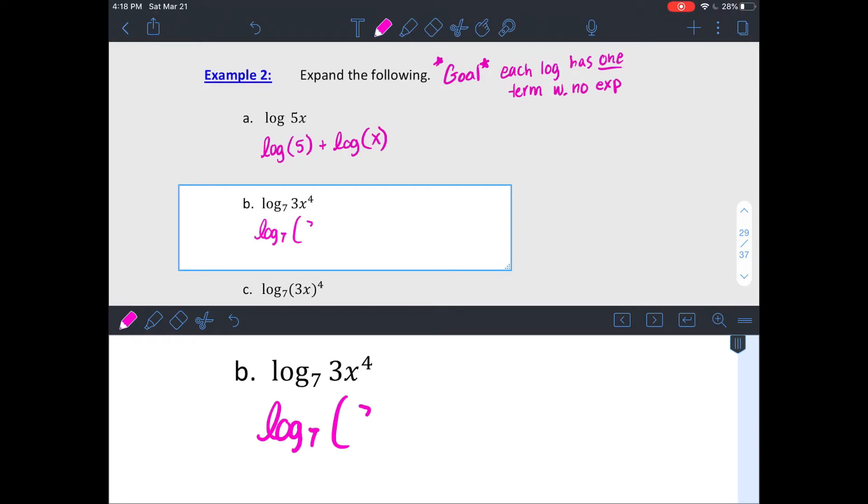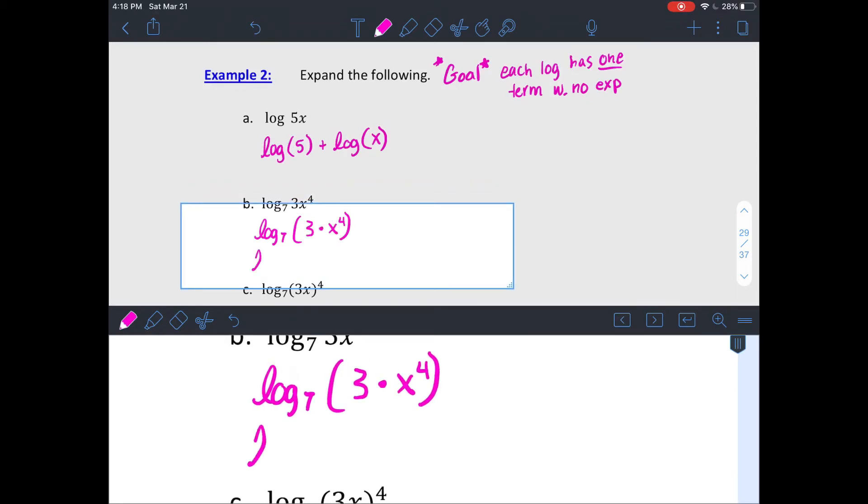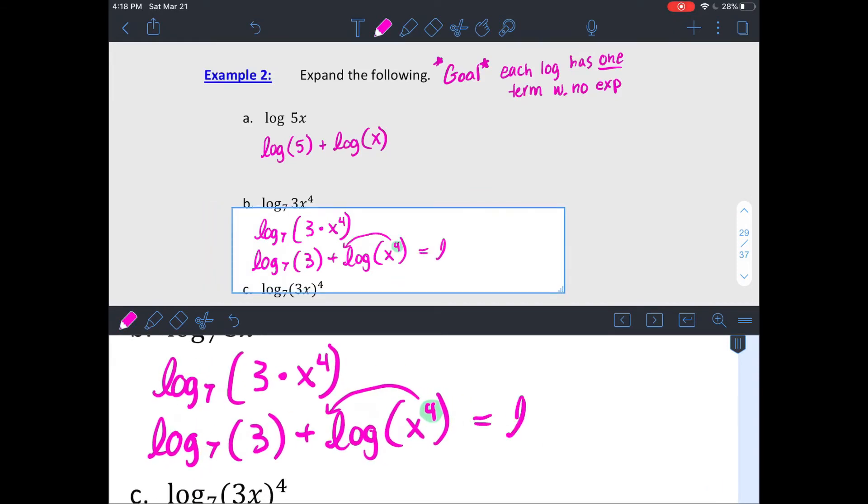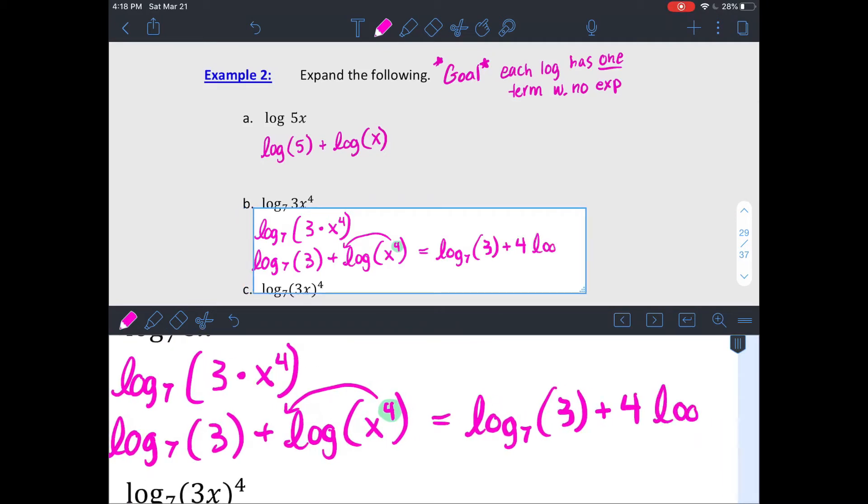This one, I have 3 times x to the 4th inside of that logarithm, which means again, multiplication can get expanded out into addition of log of the two things that were being multiplied. And then that x to the 4th bring out your power out in front because that's the same thing as 4 times log of x. Now it's down to single terms inside, no exponents. It's expanded out all the way.